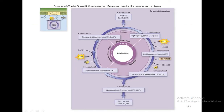As shown in this diagram, 6 molecules of carbon dioxide react with 6 molecules of ribulose 1,5-bisphosphate to form 12 molecules of 3-phosphoglycerate with the help of rubisco. This is where the first phase ends.